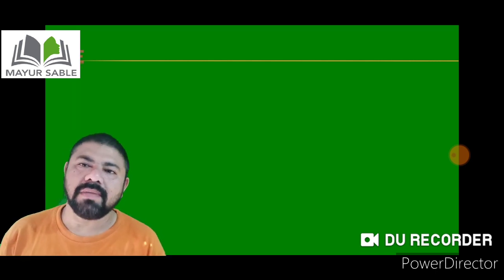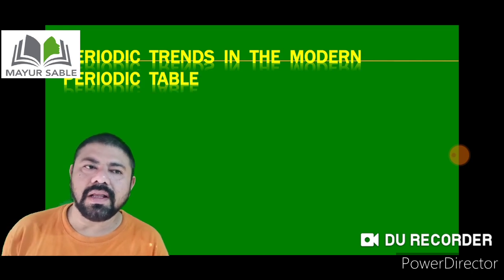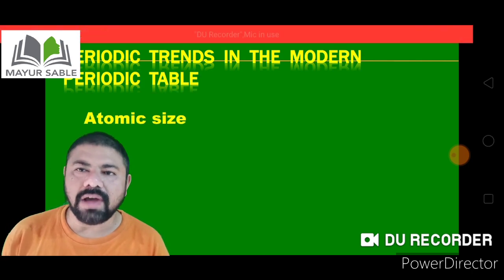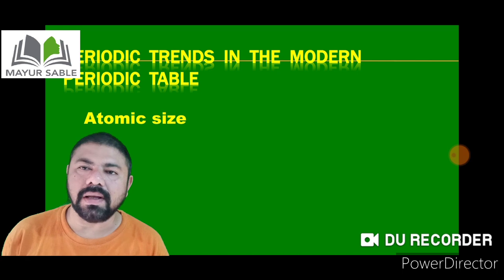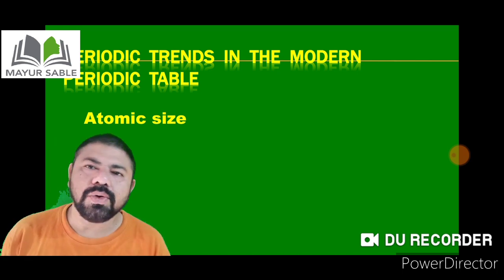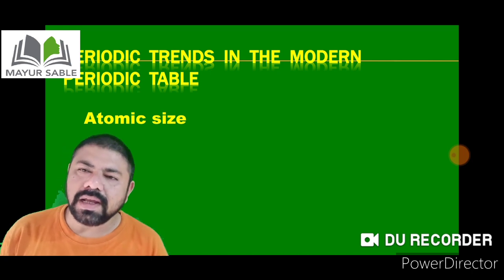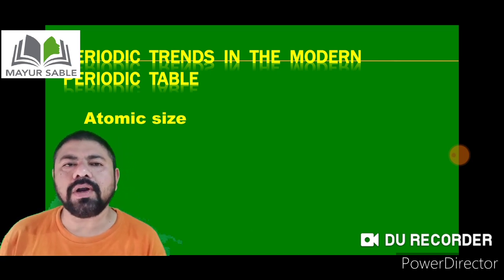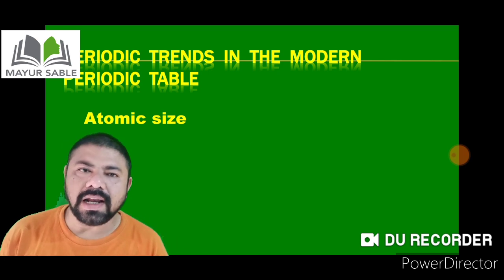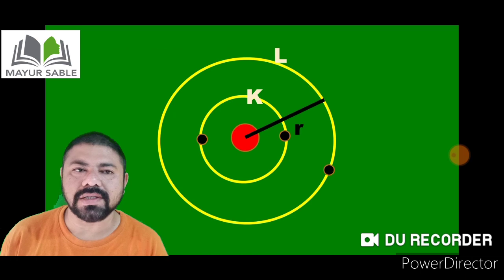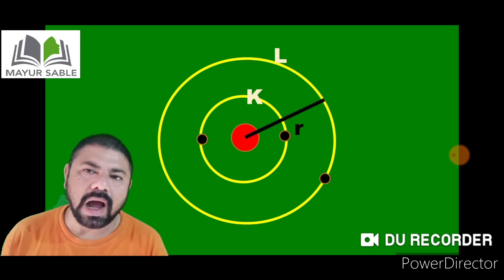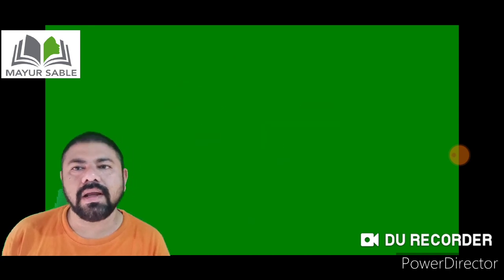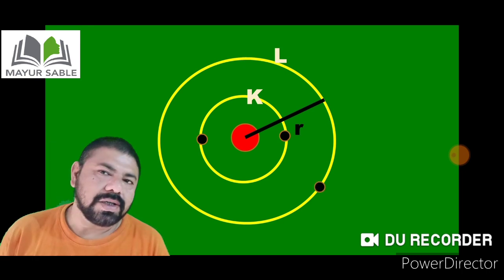Welcome again. Yesterday we studied the periodic trends in the periodic table — that was valency. Today we are going to study a new periodic trend called atomic size. When the properties of elements in a period or group of a modern periodic table are compared, a certain regularity is observed in their variations. This is called a periodic trend.